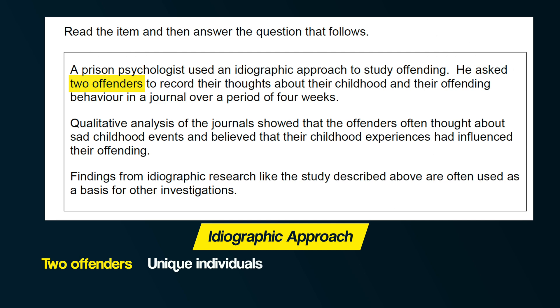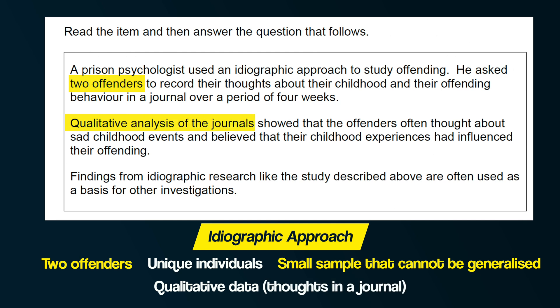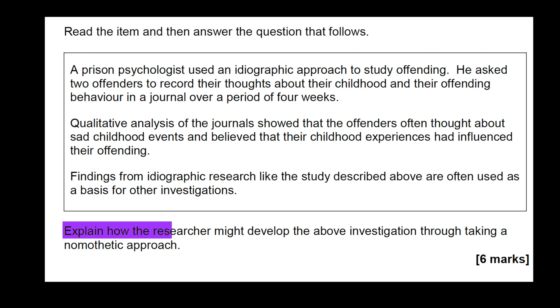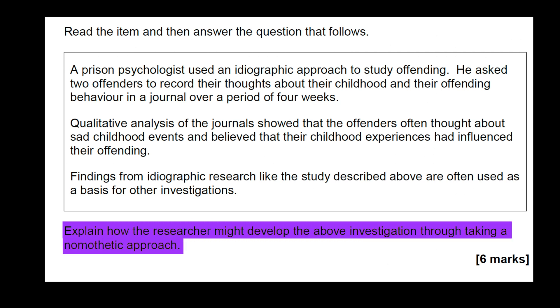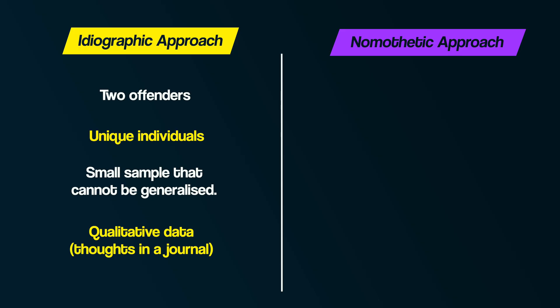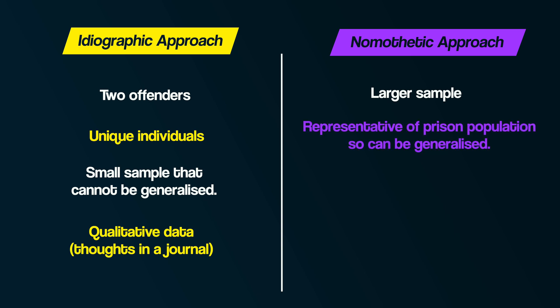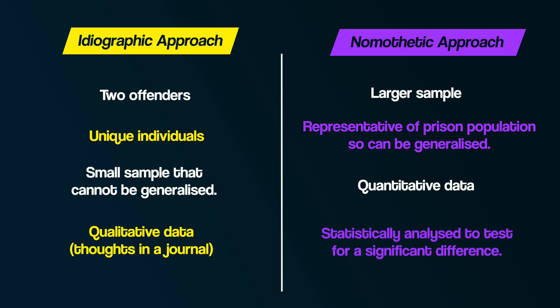Now for the exam question: explain how the researcher might develop the above investigation through taking a nomothetic approach. Rather than having two offenders, you could use a larger, representative sample of the wider prison population to help make generalisations. Quantitative methods could be used instead — such as structured interviews or standardised questionnaires with closed questions — producing large amounts of quantitative data. This data could then be statistically analysed to test for a significant difference and generalise findings to the wider prison population.